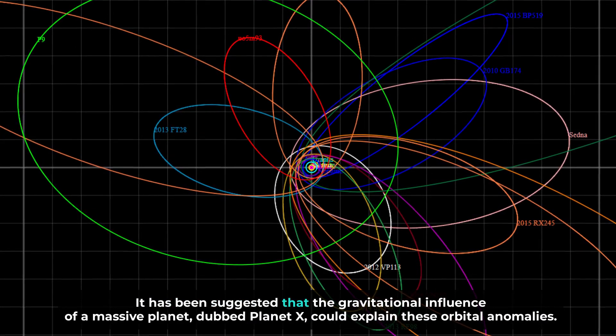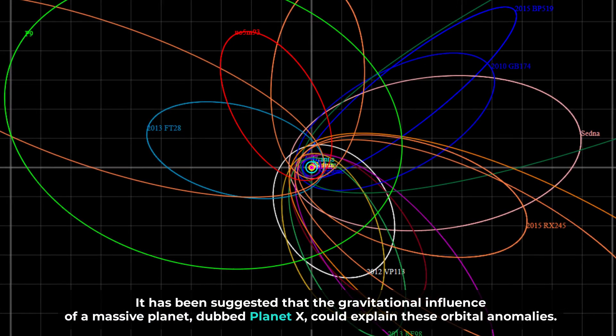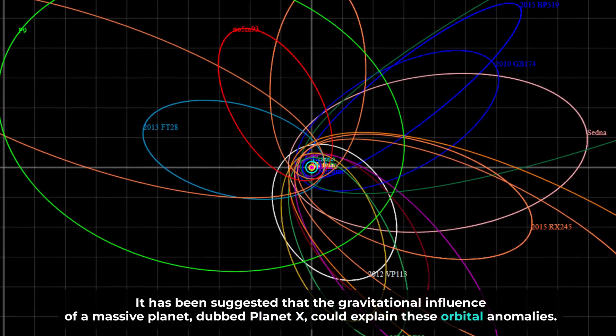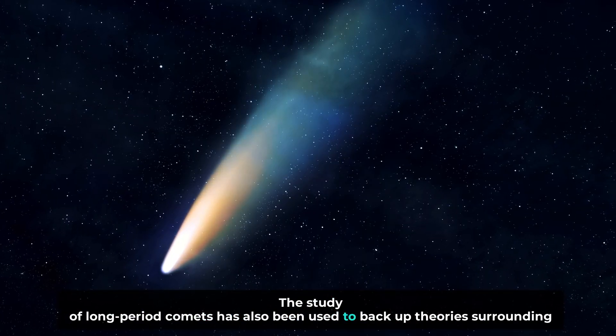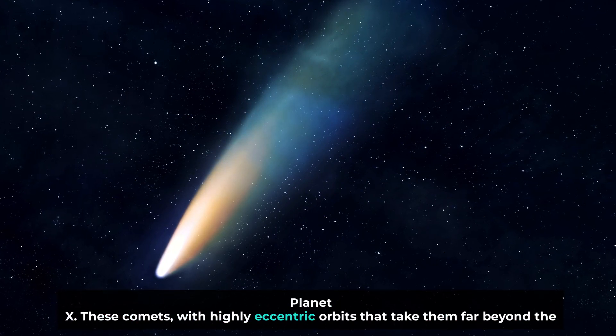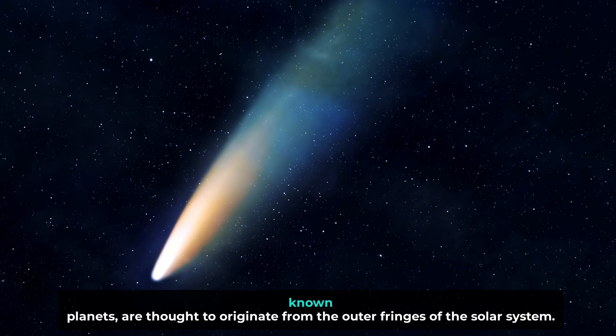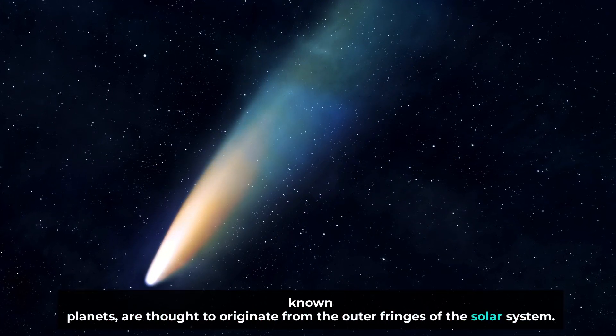It has been suggested that the gravitational influence of a massive planet, dubbed Planet X, could explain these orbital anomalies. The study of long-period comets has also been used to back up theories surrounding Planet X. These comets, with highly eccentric orbits that take them far beyond the known planets, are thought to originate from the outer fringes of the solar system.